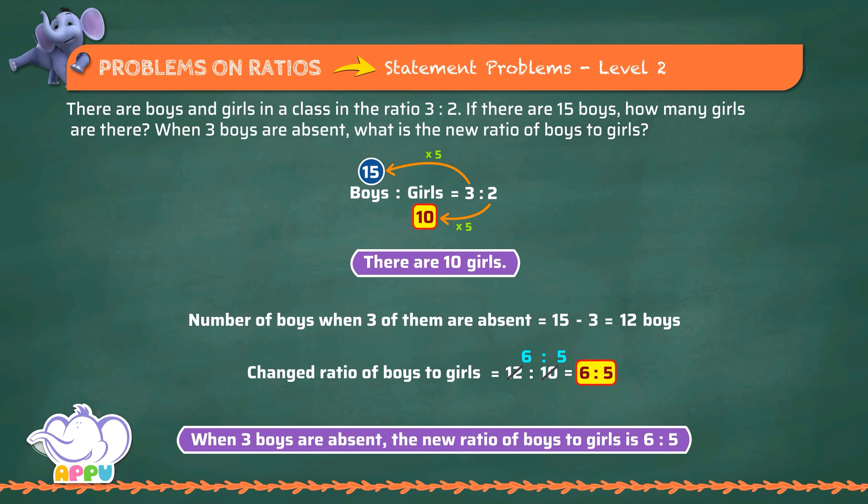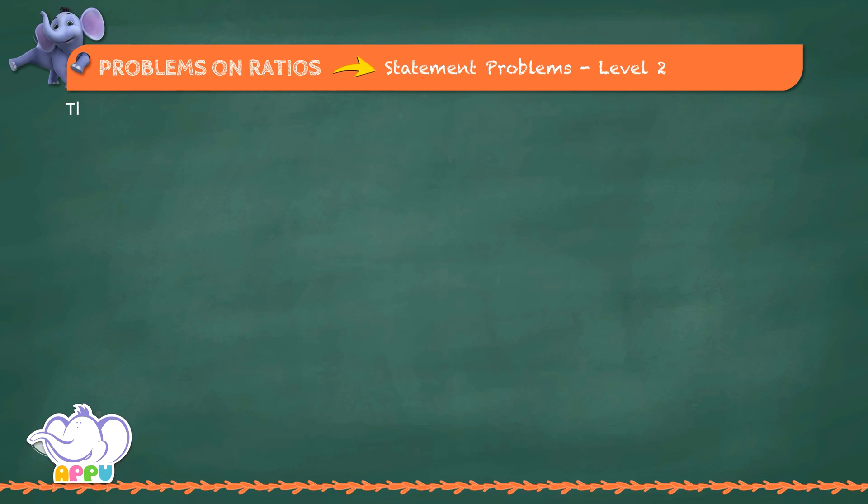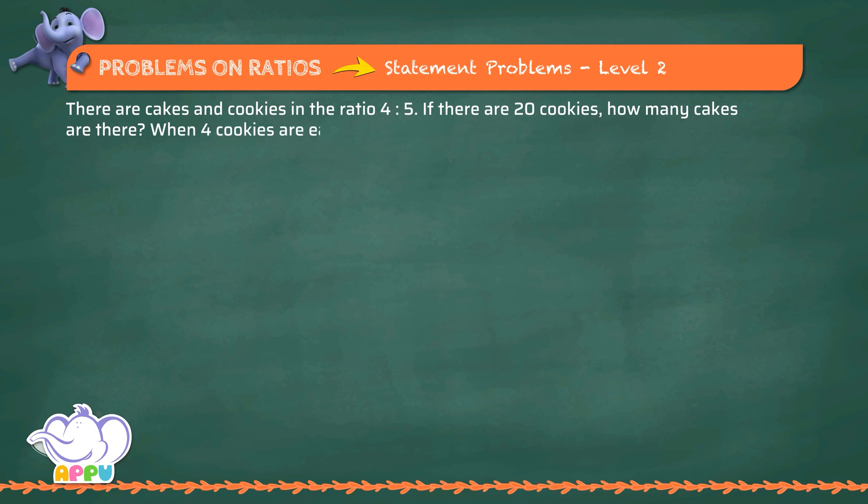We get the changed ratio as 6 is to 5. How smart! There are cakes and cookies in the ratio 4 is to 5. If there are 20 cookies, how many cakes are there? When 4 cookies are eaten, what is the new ratio of cakes to cookies?